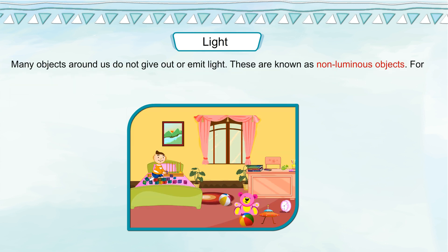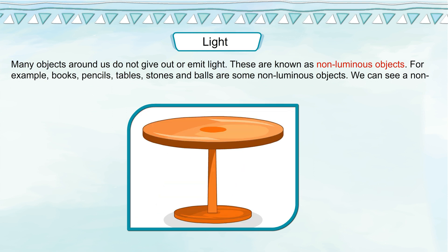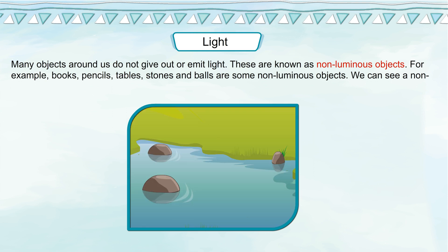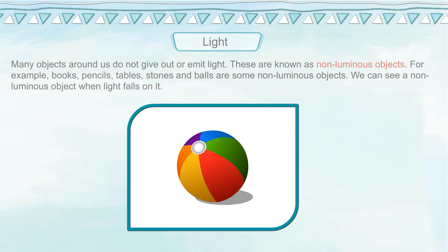Many objects around us do not give out or emit light. These are known as non-luminous objects. For example, books, pencils, tables, stones and balls are some non-luminous objects. We can see a non-luminous object when light falls on it.